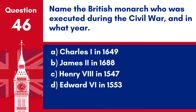Question 46. Name the British monarch who was executed during the Civil War and in what year. a. Charles I in 1649. b. James II in 1688. c. Henry VIII in 1547. d. Edward VI in 1553. Answer: a. King Charles I was executed in 1649, a pivotal moment in the English Civil War that temporarily abolished the monarchy and established the Commonwealth.